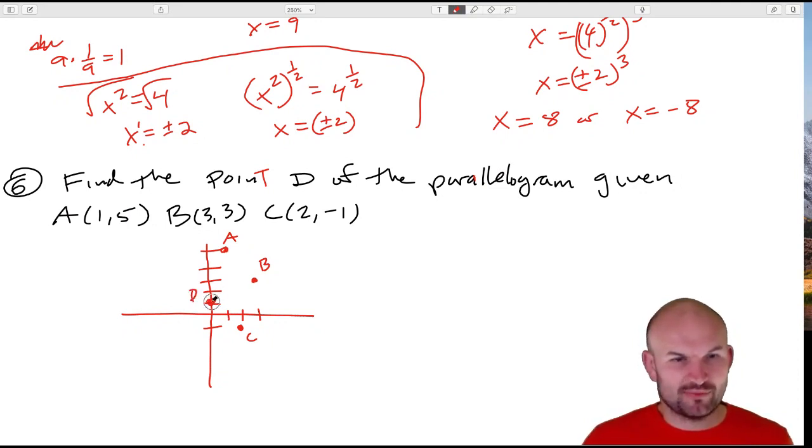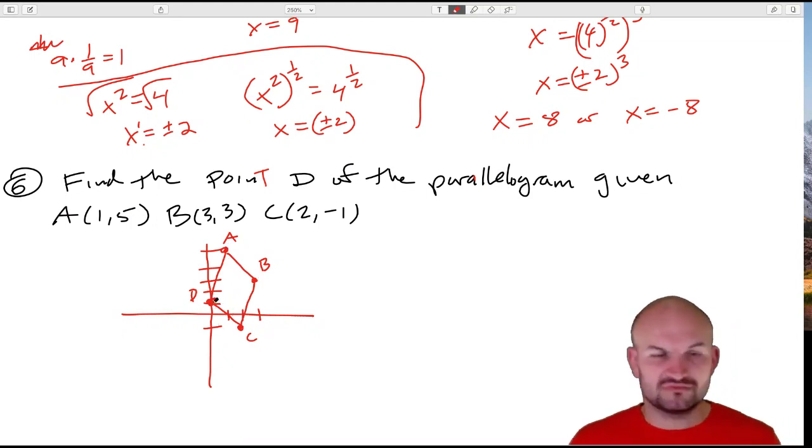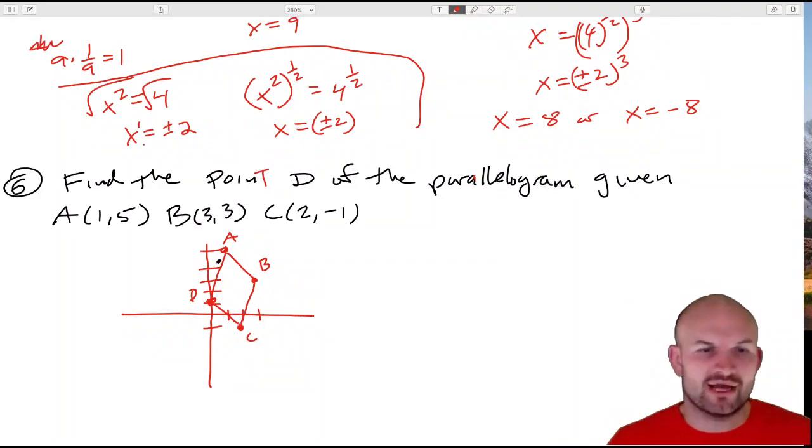And my graph is not going to be perfect, but I can always confirm it. From A to B, that's down one, two, over one, two. And then this one is down two, over two. And it looks like it's going to work out, and that will produce a parallelogram.